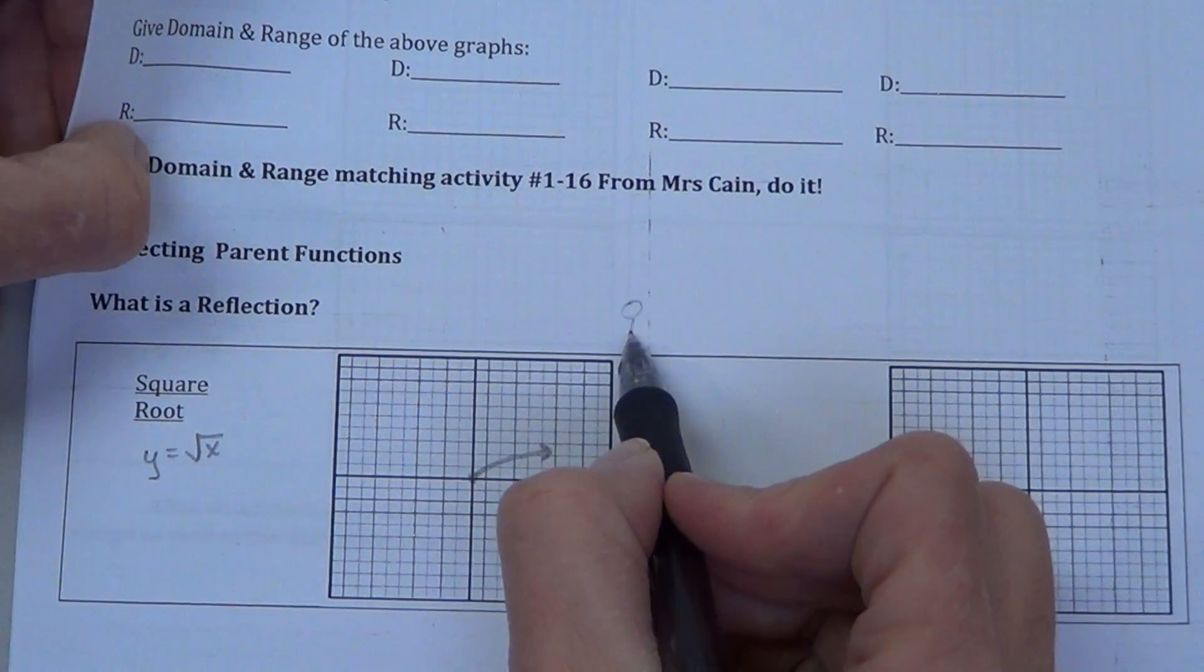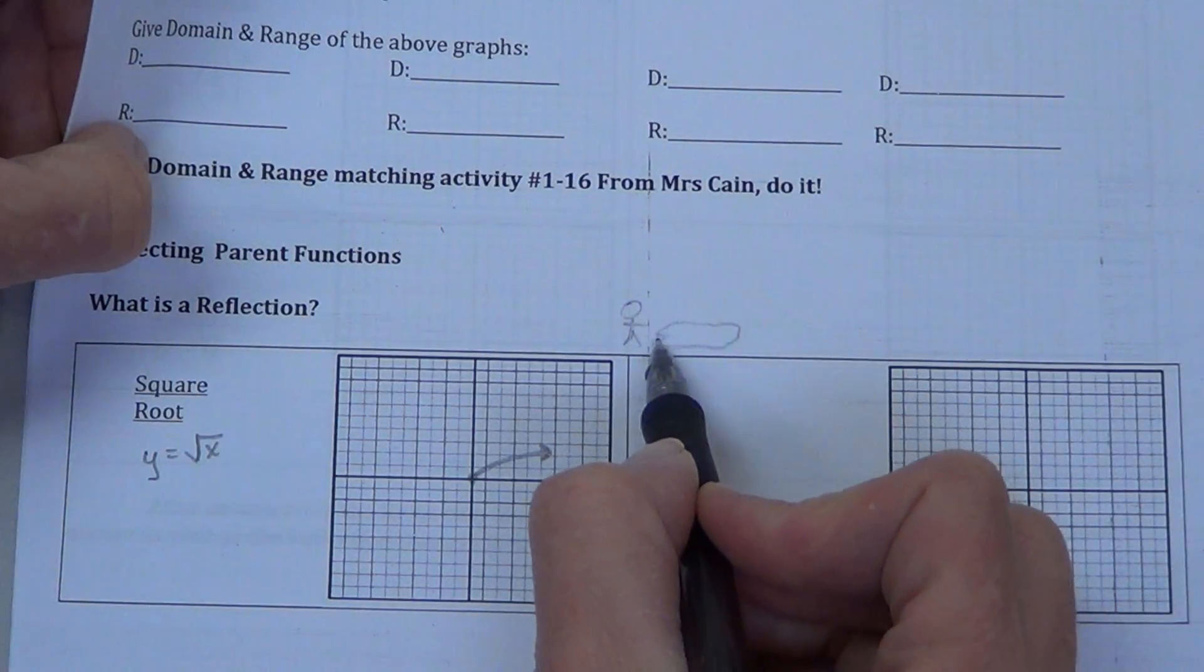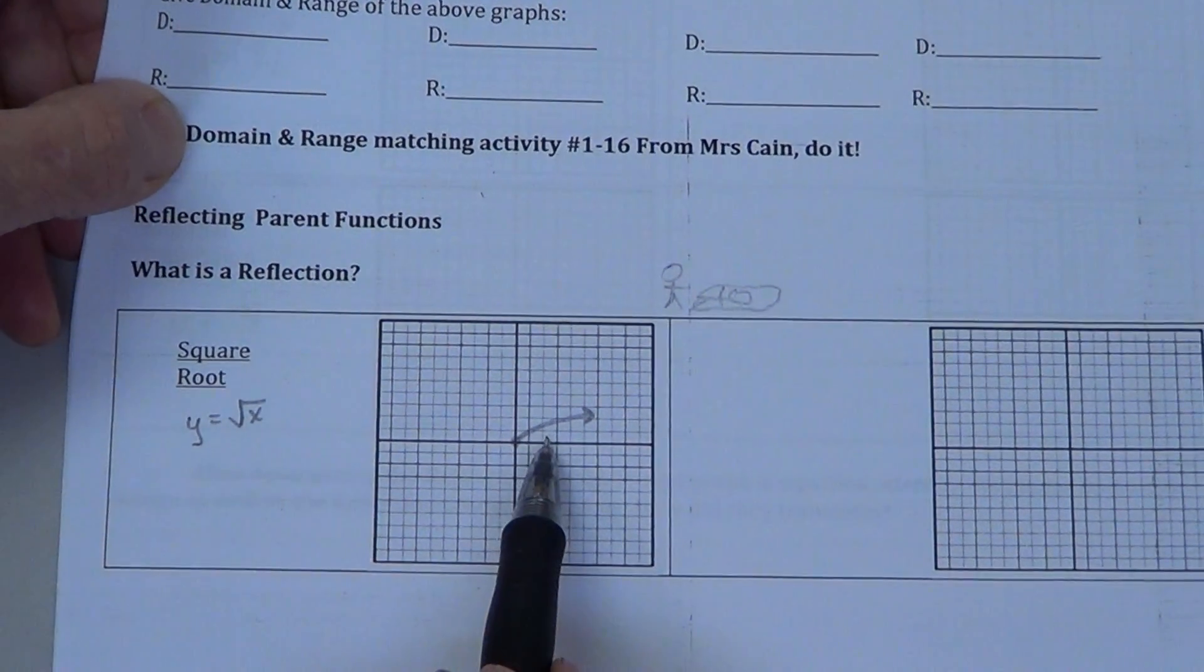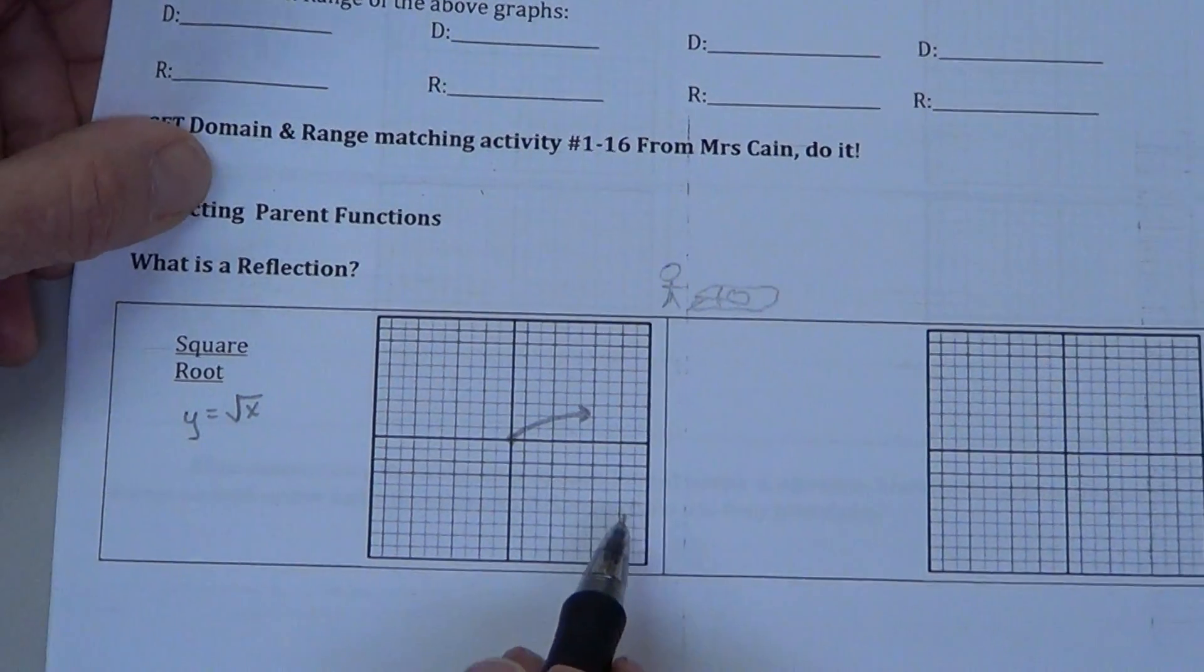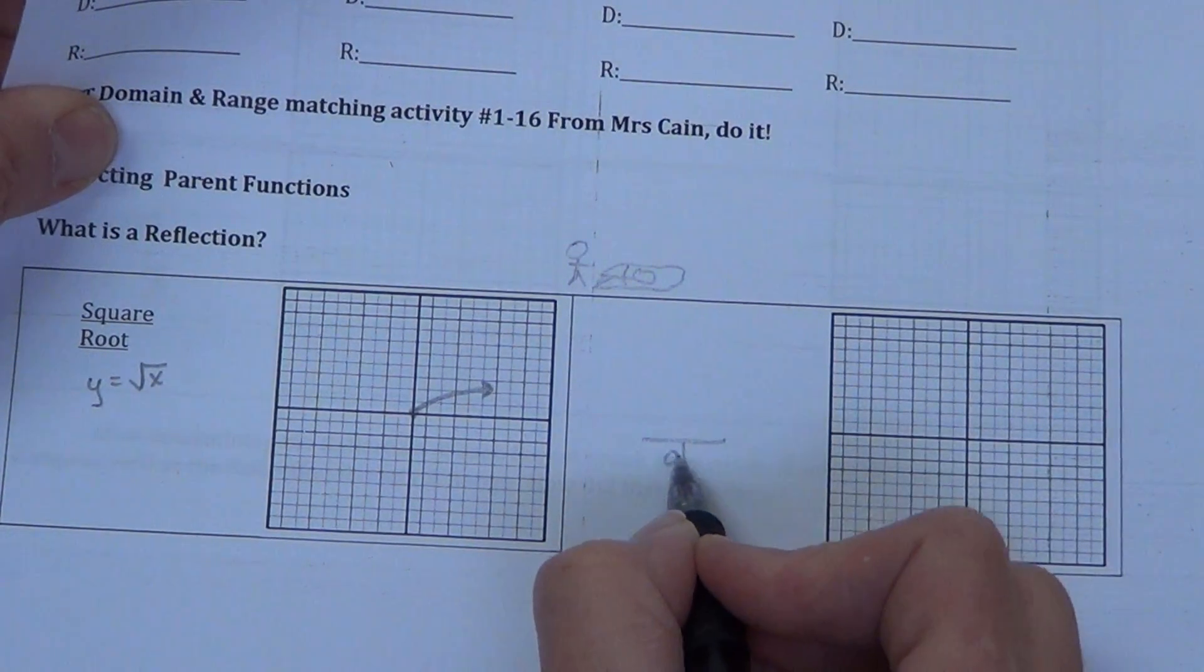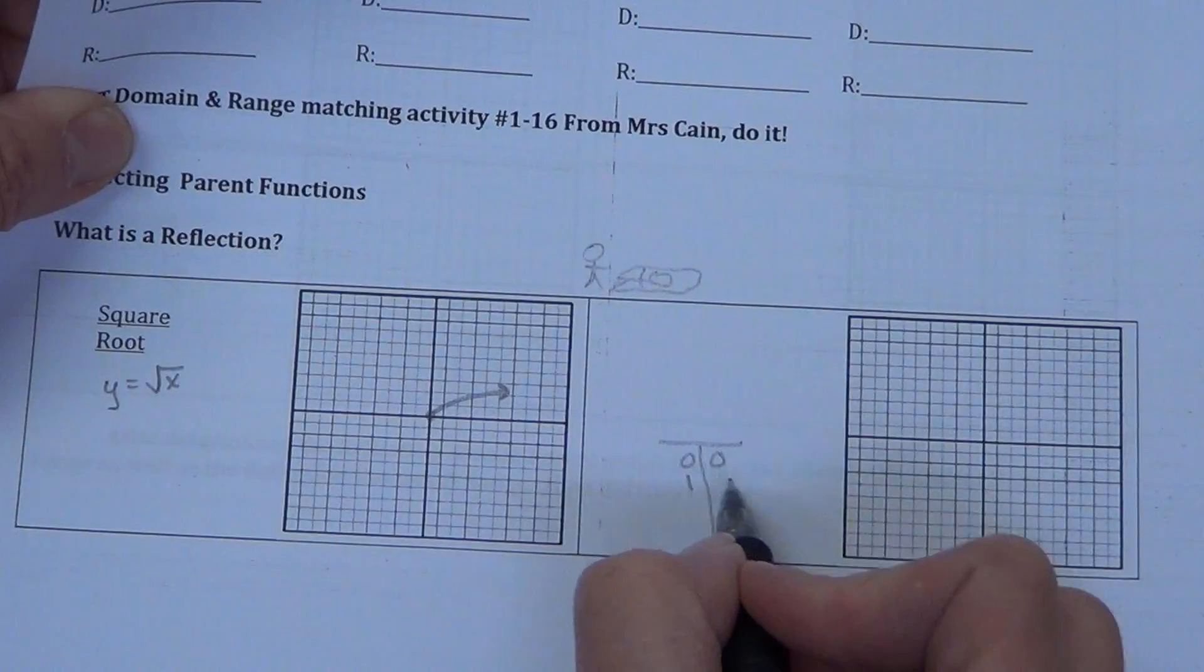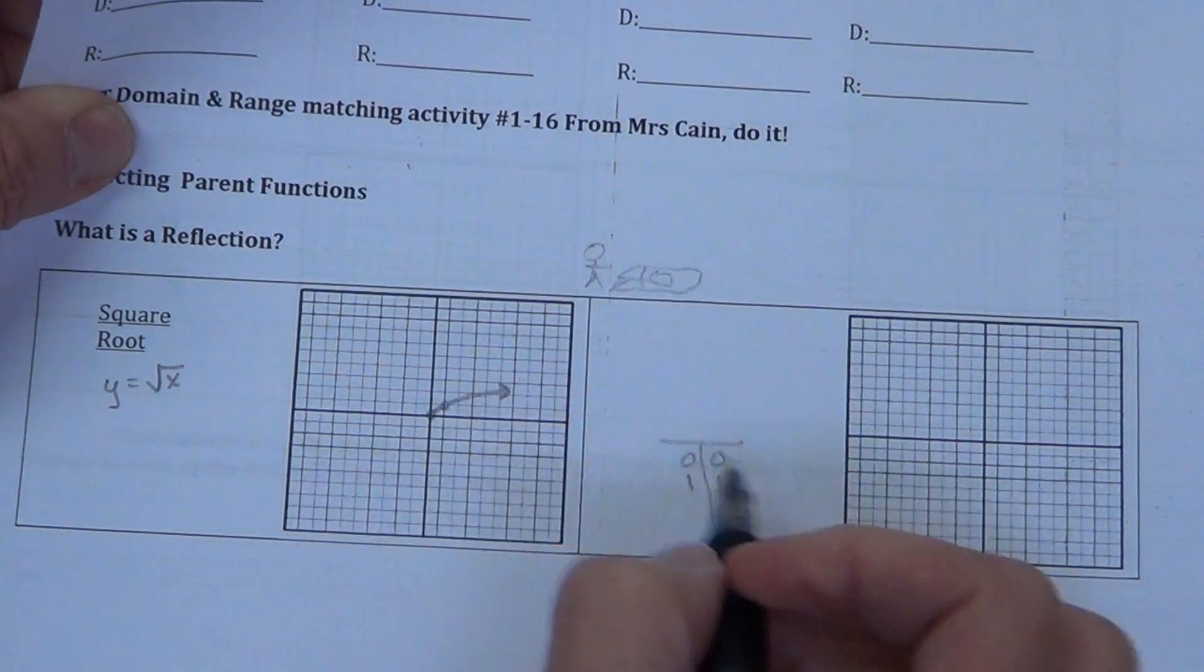If you think about what a reflection looks like, you're standing here looking down into a pond and you see your reflection, right? Well, we want to do the same thing with this graph. We want to take and reflect it across this x-axis. So, where we had (0,0) as our point in our parent function, and we had square root of 1 equaling 1, right there on that point.